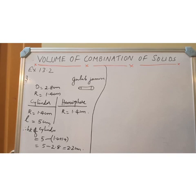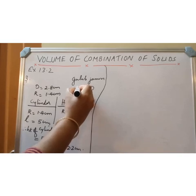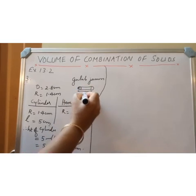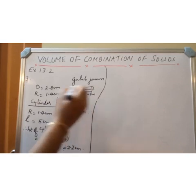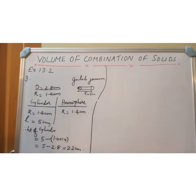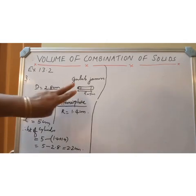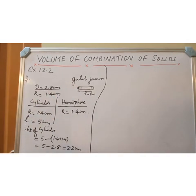The shape of the Gulab Jamun is like this: a middle cylinder and two hemispherical ends. The total length is given as 5 cm and the diameter is given as 2.8 cm. So diameter 2.8 means radius equals 1.4 cm.